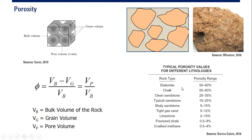For diatomite and chalk, porosity can reach 50 to 60 percent. Clean sandstone is typically 25 to 30 percent, typical sandstone 15 to 25, shaly sandstone 5 to 15, tight gas 5 to 12, and limestone 2 to 15 percent. These are typical values — use them as a rule of thumb, but check on a case-by-case basis.